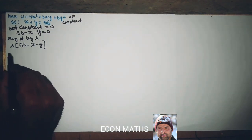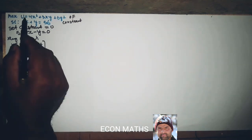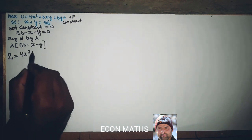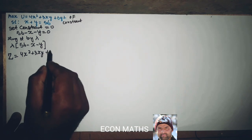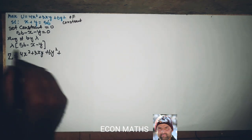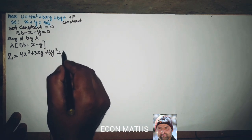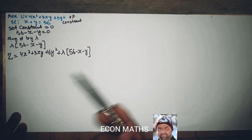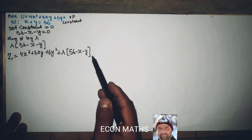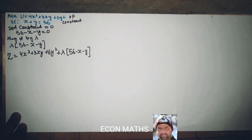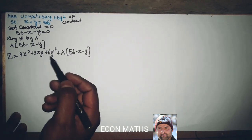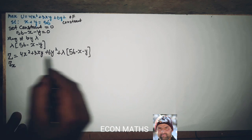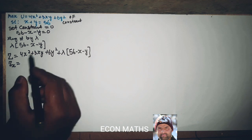To get the Lagrange function, we will add this term to the objective function. So Z equals 4x squared plus 3xy plus 6y squared, plus lambda times (56 minus x minus y). Now to get the values of x, y, and lambda, we will partially differentiate this Lagrange function with respect to x, y, and lambda.